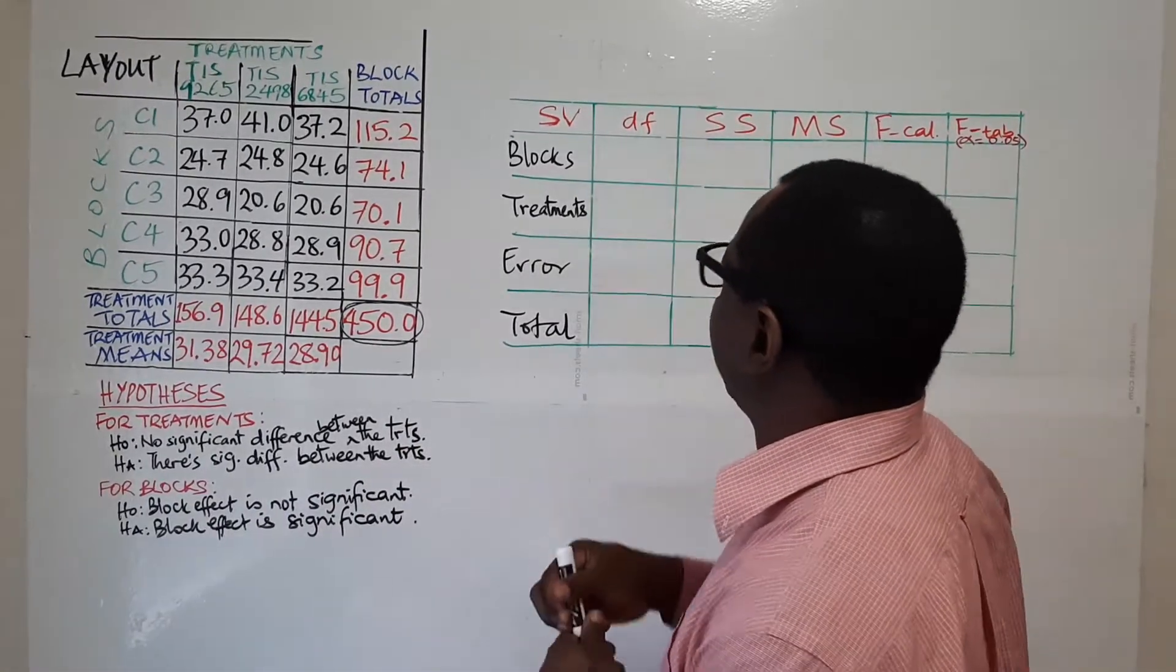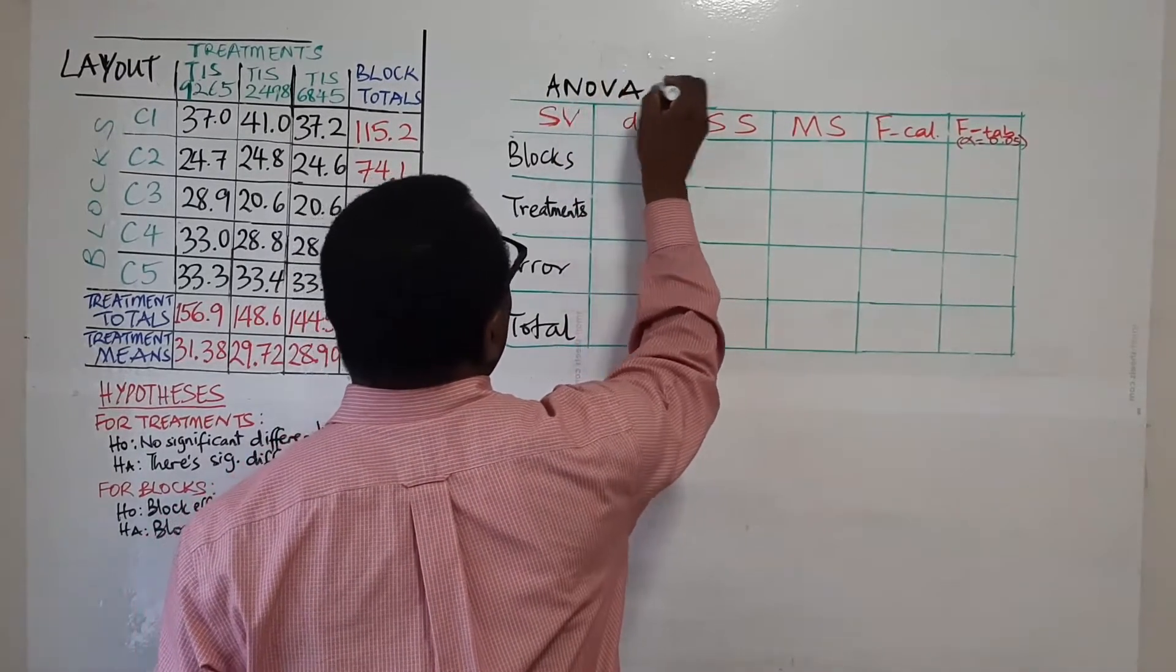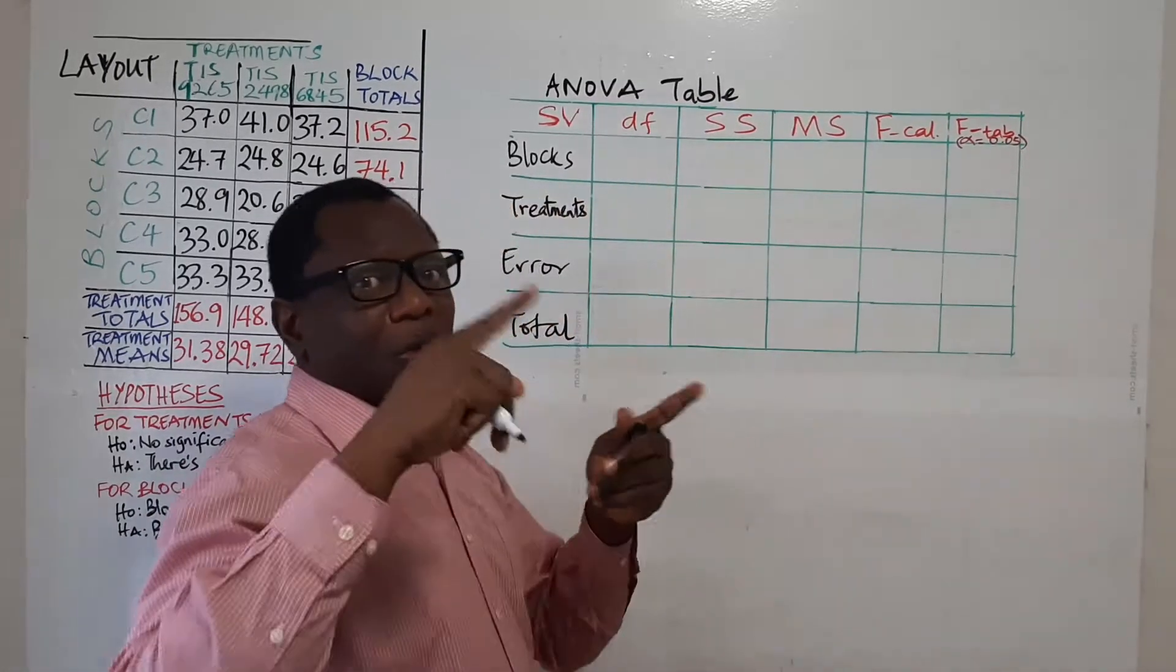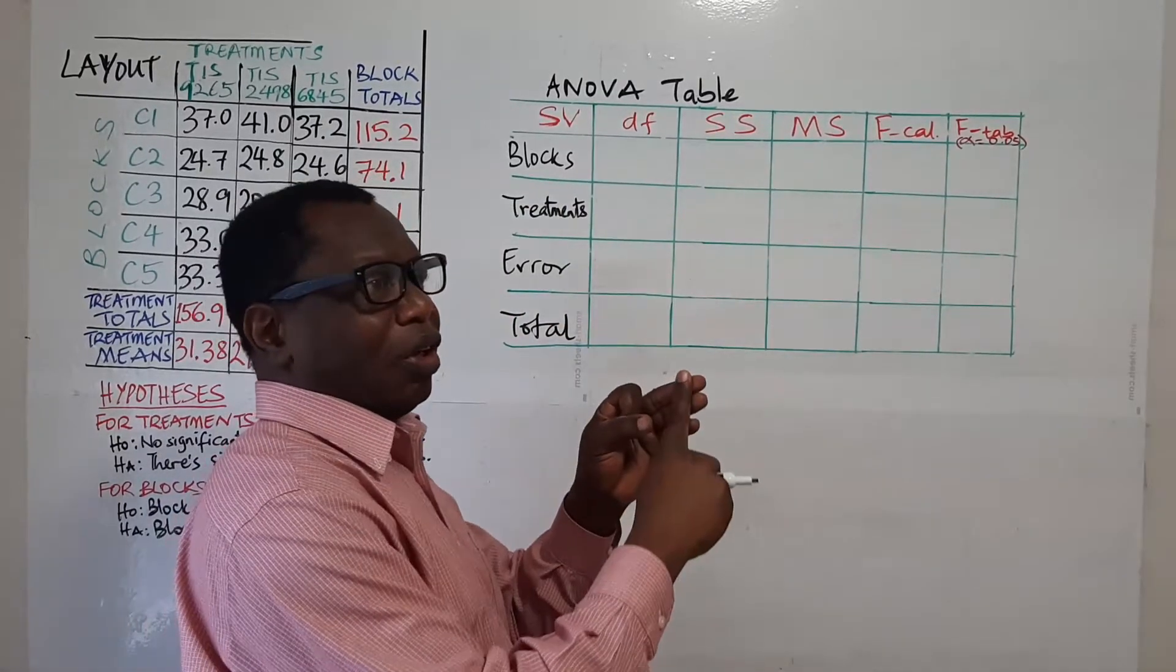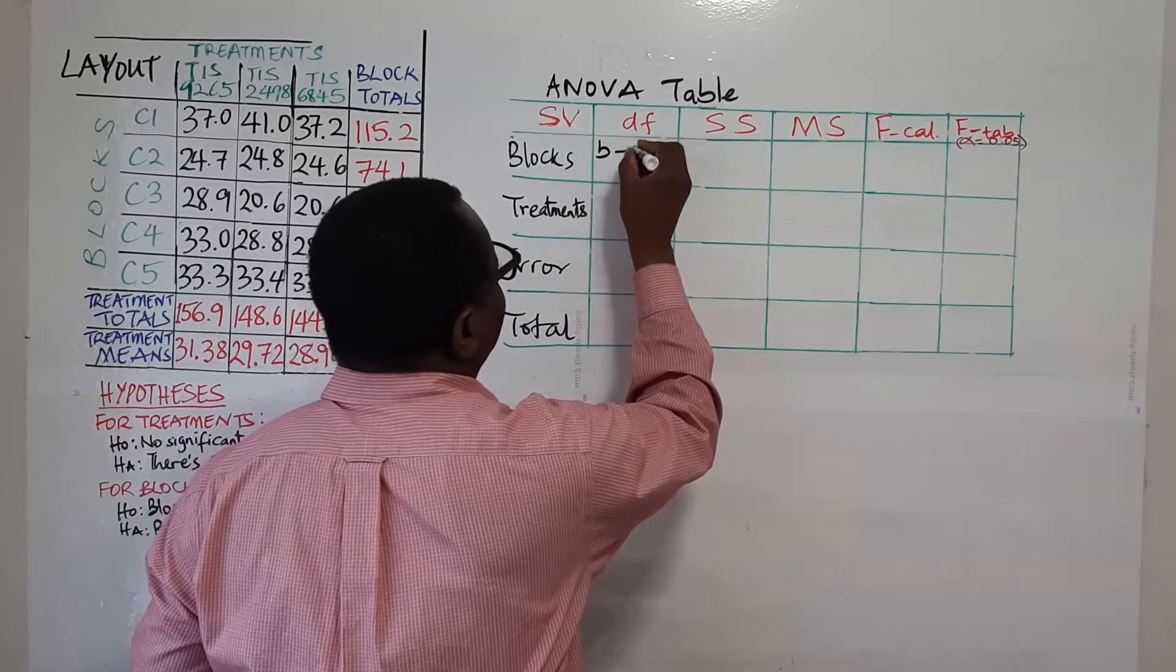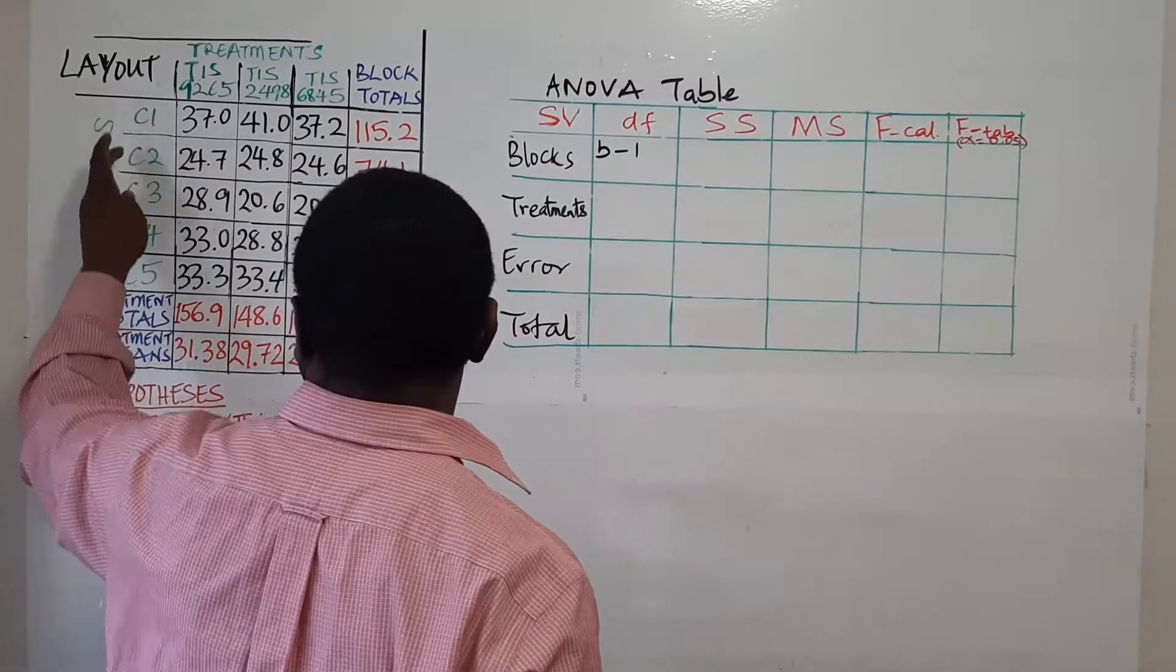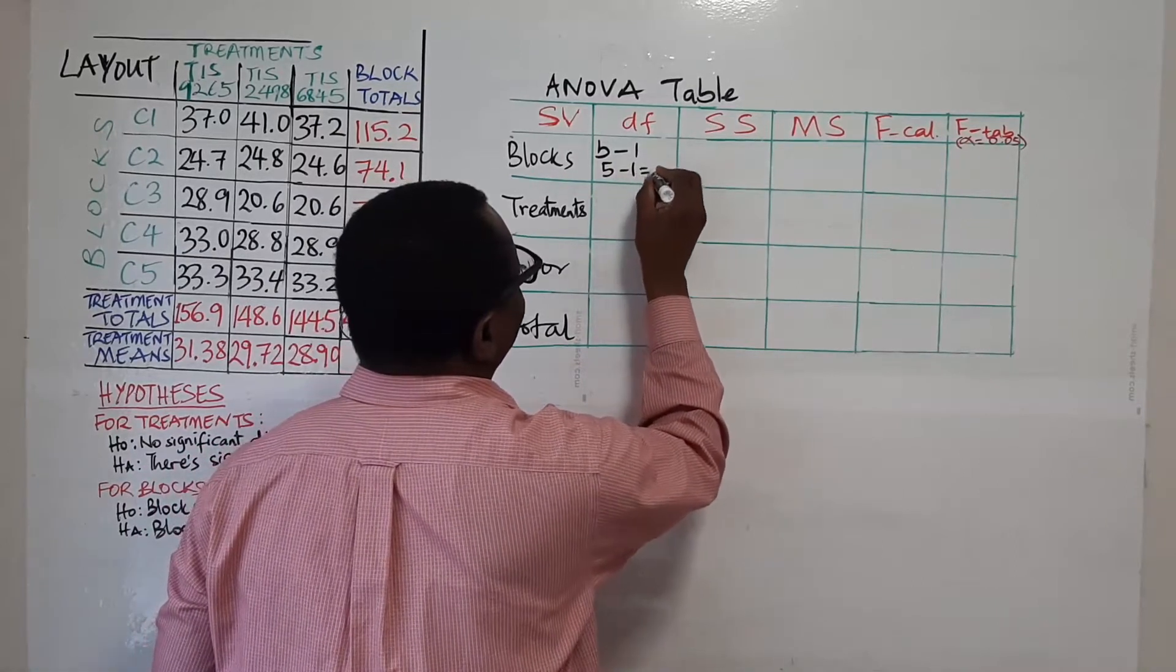Now in this ANOVA table our degrees of freedom, if you recall from what we did under Completely Randomized Design, it's usually the number of the objects minus one. So for blocks it will be number of blocks which is b minus one. How many blocks do we have? If you go back to the layout one, two, three, four, five blocks. So this will be equal to five minus one which is four.